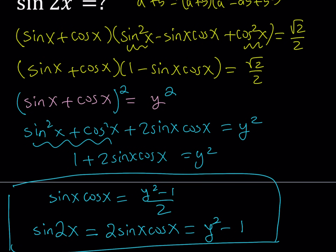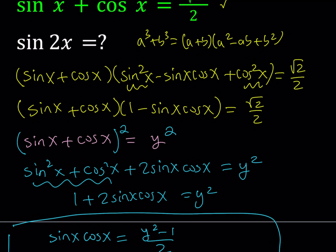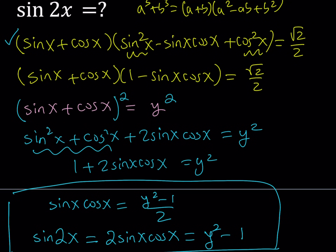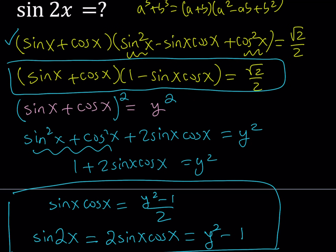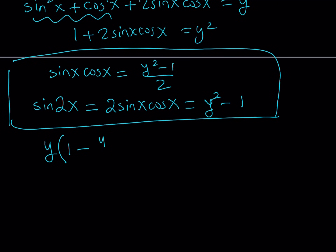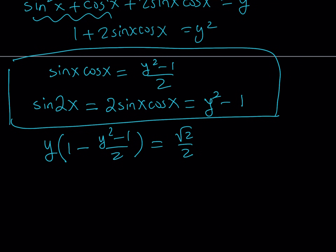And y is equal to sine x plus cosine x. So this means that if we're able to find sine x plus cosine x, we can easily find sine of 2x from there. The next step is substituting everything into the factored form. I replace sine x plus cosine x with y, and the other factor, 1 minus sine x cosine x, can be written as 1 minus (y squared minus 1) over 2. And this is equal to square root of 2 divided by 2, giving us an equation in a single variable.